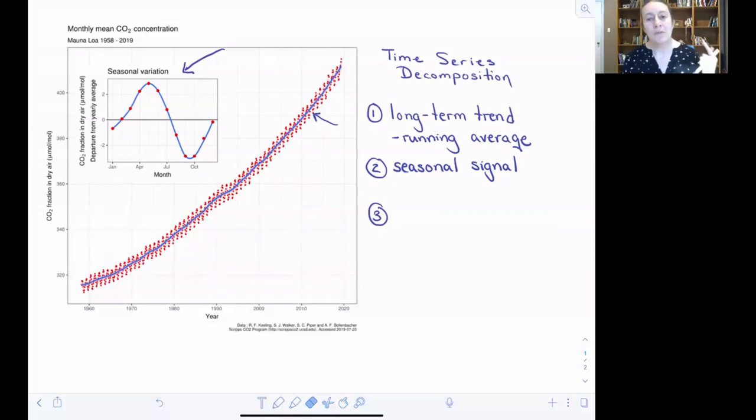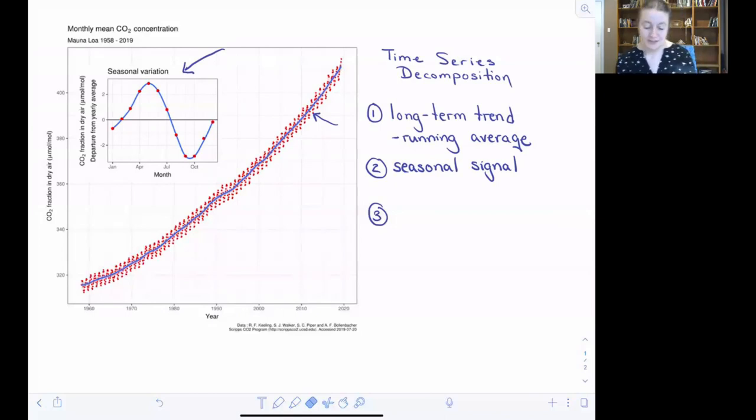And then the residuals from that analysis create our third component. These residuals that are left over after the seasonal signal are often referred to as the irregular fluctuations or the residual variation in the time series. This is the variation in the data that can't be explained by that long term movement in the data, nor can it be explained by the seasonal fluctuations.